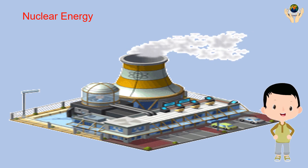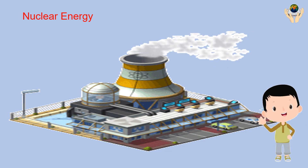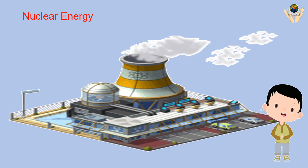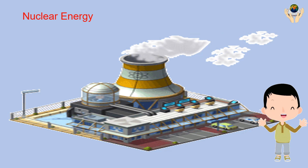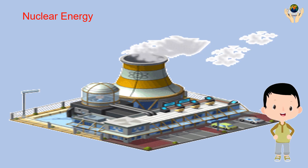Nuclear power plants use low-enriched uranium fuel to produce electricity through a process called fission — the splitting of uranium atoms in a nuclear reactor. Nuclear power is a clean and efficient way of boiling water to make steam, which turns turbines to produce electricity.